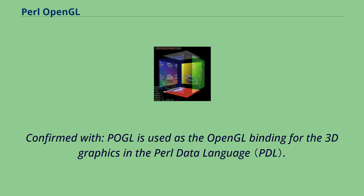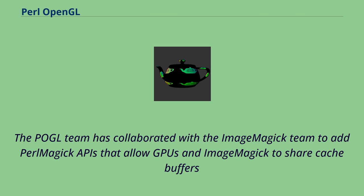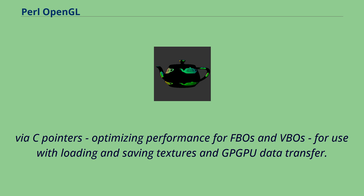Pugl is used as the OpenGL binding for the 3D graphics in the Perl data language. The Pugl team has collaborated with the ImageMagick team to add Perl Magic APIs that allow GPUs and ImageMagick to share cache buffers via C-pointers, optimizing performance for FBOs and VBOs for use with loading and saving textures and crew data transfer.